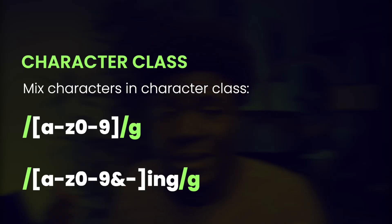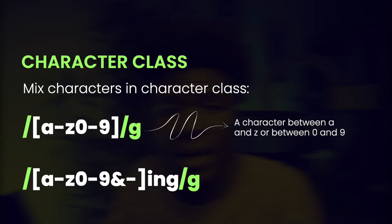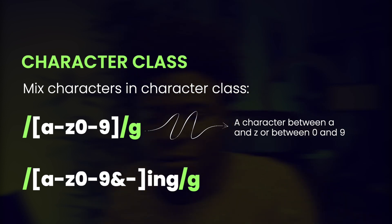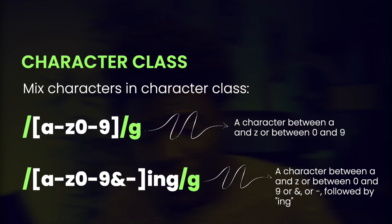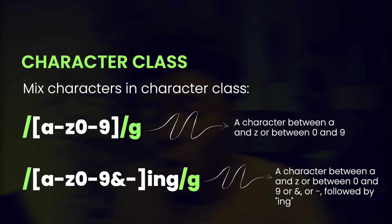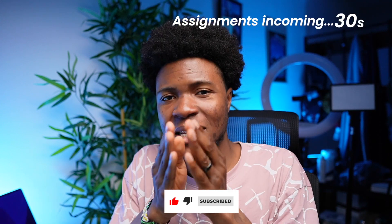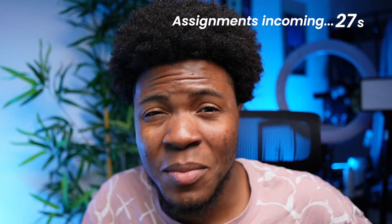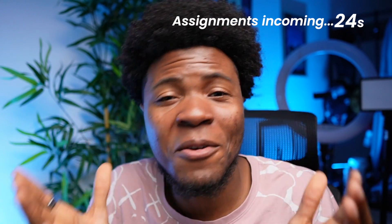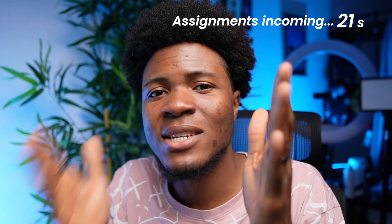In your character classes, you can mix digits and letters. For example, A to Z combined with 0 to 9. Or you can also mix symbols: A to Z, 0 to 9, ampersand, hyphen, followed by ING. This character class would match any letter between A to Z, or any number between 0 and 9, or the ampersand symbol, or the hyphen symbol, followed by ING. Character classes are this OR this — not this followed by this.